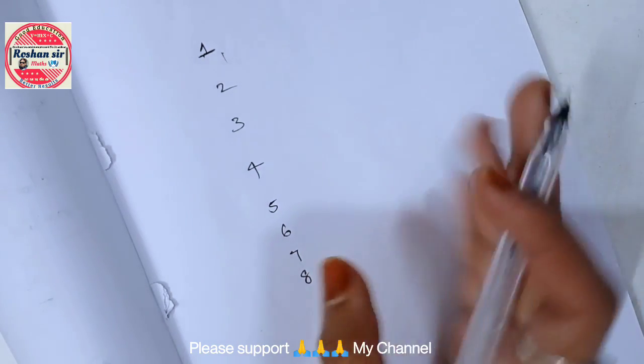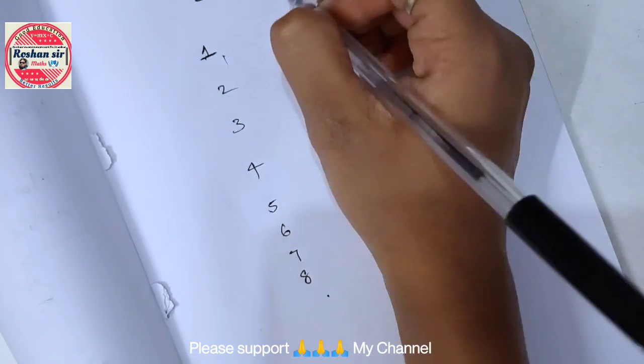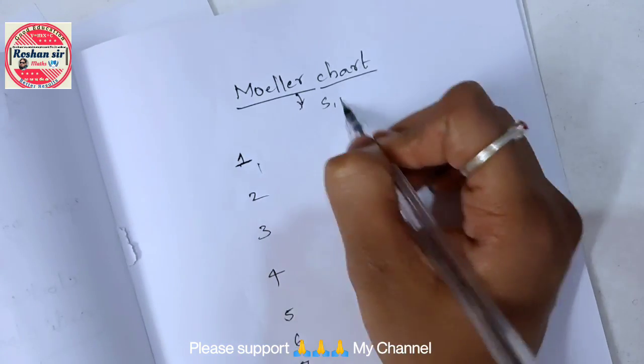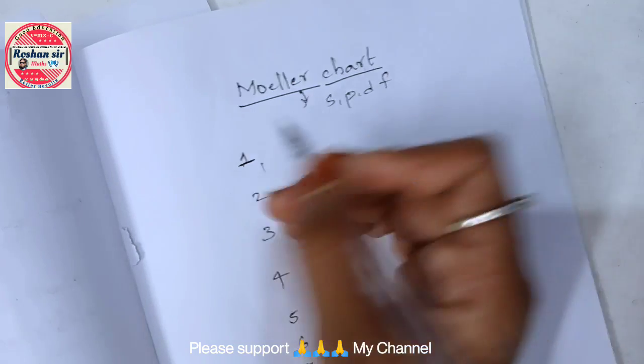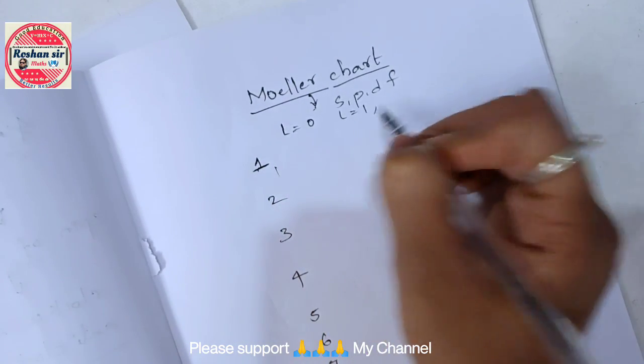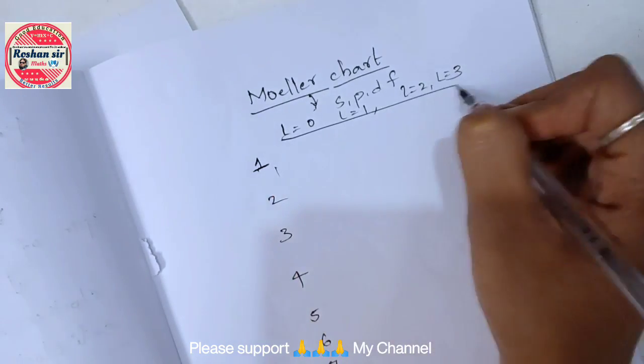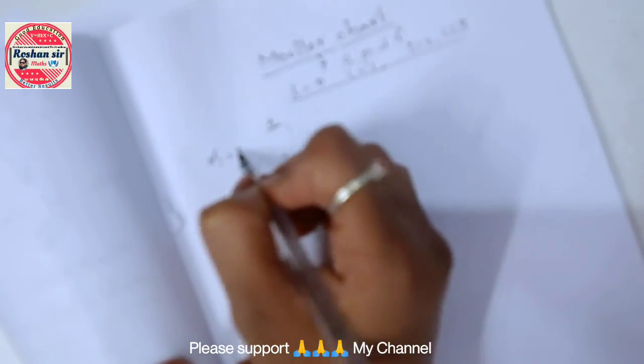As we have SPDF, right, it means we have 4 different orbitals: S, P, D, F. Now here take L equal to 0, L equal to 1, L equal to 2, and L equal to 3.